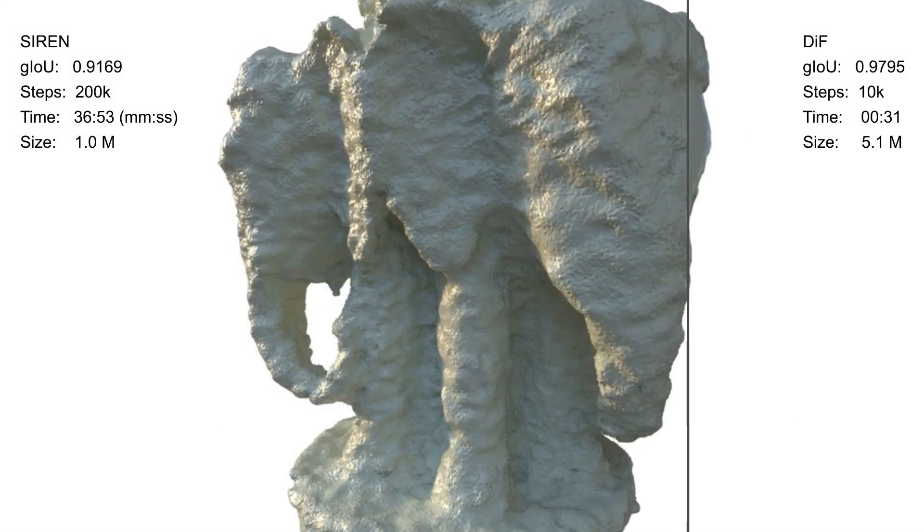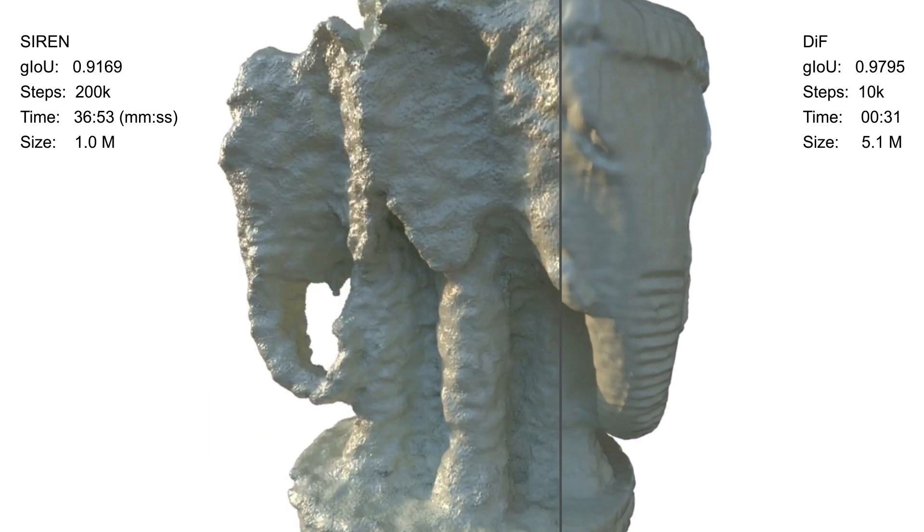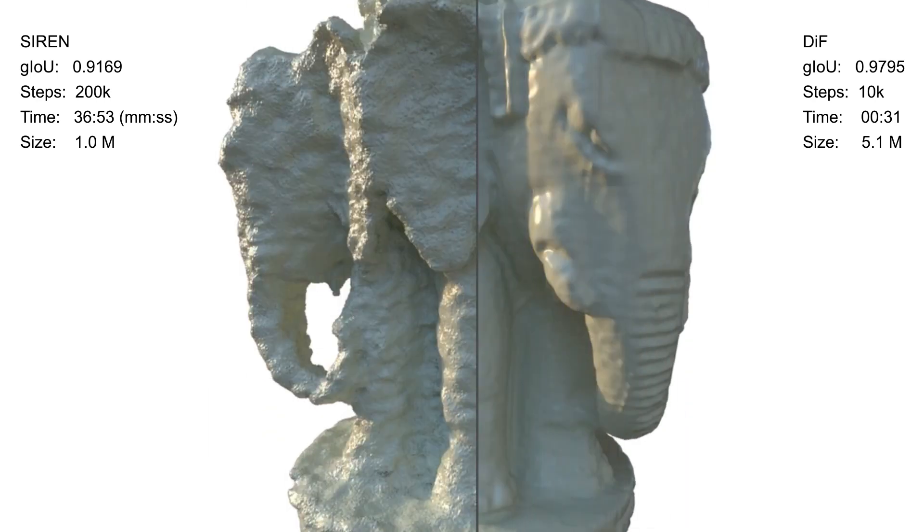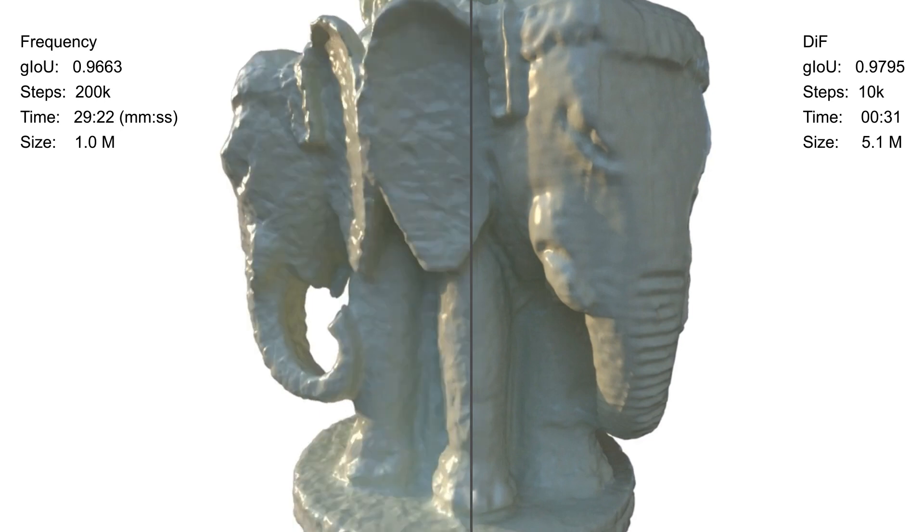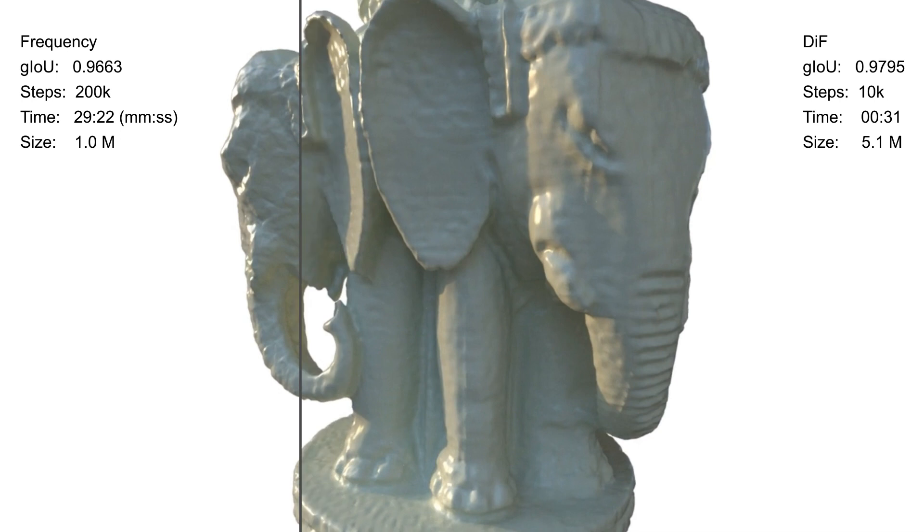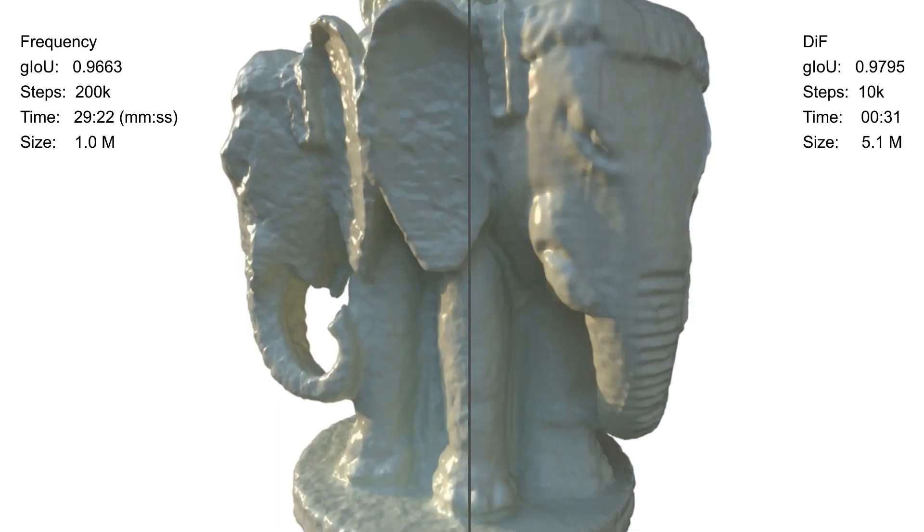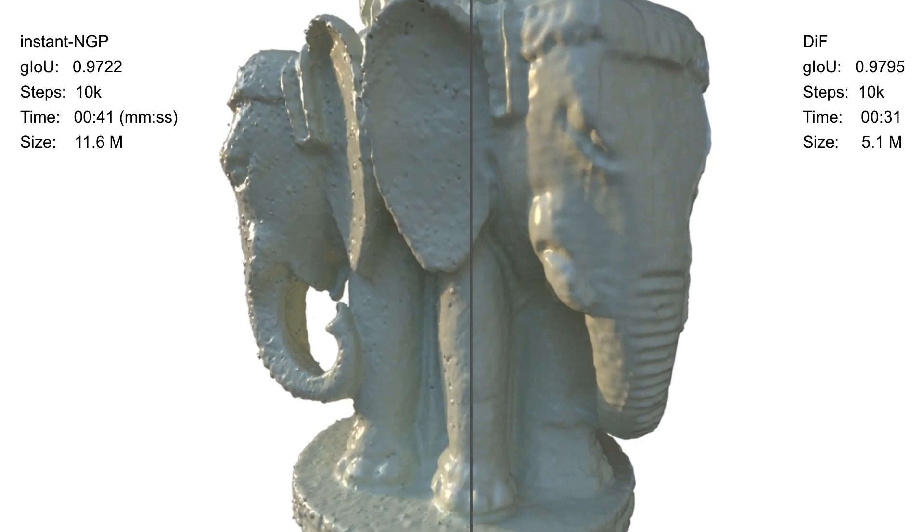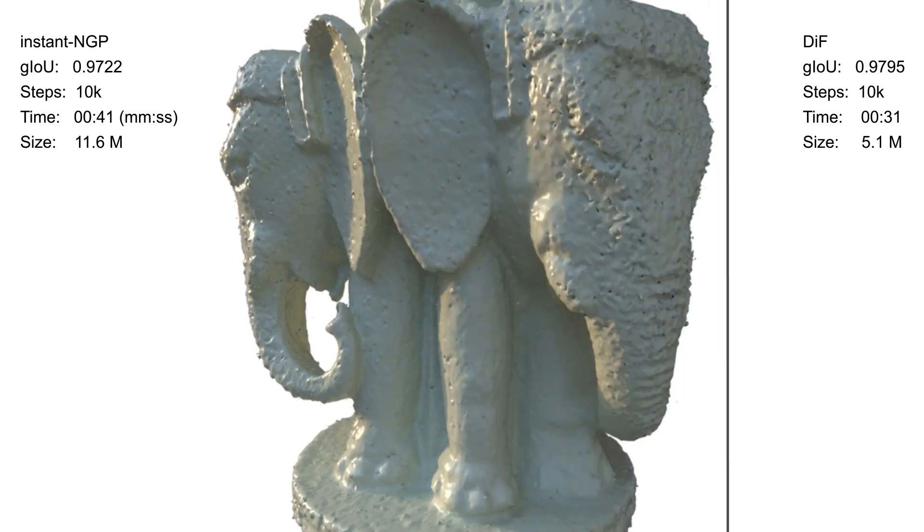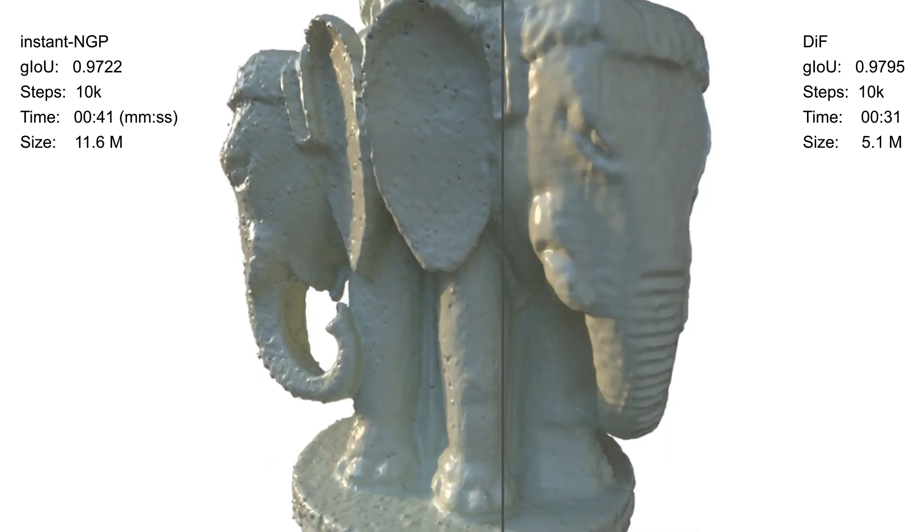Our method leads to visually better results. It recovers high-frequency geometric details and contains less noise on smooth surfaces, for example, the elephant face. The high visual quality is also reflected by the highest GIOU and chamfer distance values of all methods.